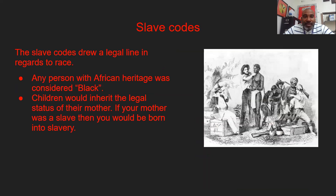The slave codes drew a legal line in regards to race. Any person with African heritage was considered to be Black. What that means is if you had a parent, a grandparent, or a great-grandparent that was African, then you were legally labeled by the United States as a Black person.